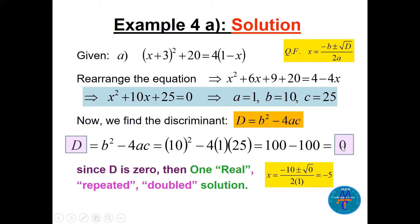Since D equals zero, we have one repeated solution. Applying the quadratic formula: x equals minus 10 plus or minus square root of zero, all divided by 2, which gives minus 10 over 2 equals minus 5. So the equation has one repeated real solution: x equals minus 5.